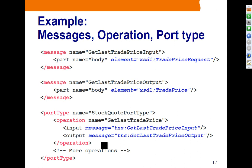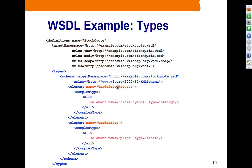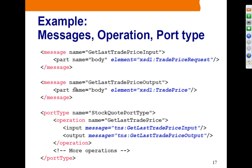We have defined two messages. The first, get last trade price input, contains a part of type trade price request, coming from the schema. The second is the response message, get last trade price output, using a global element defined in the XML schema. Up to this point, machines don't yet know which is the request and which is the response message.